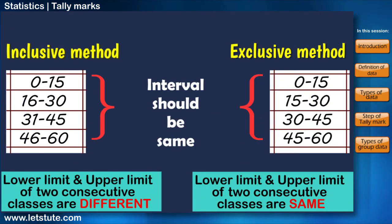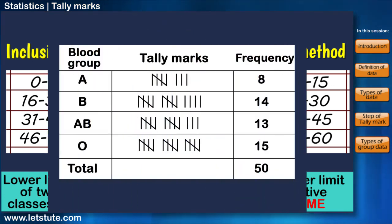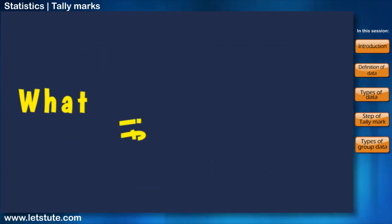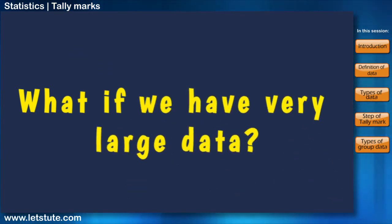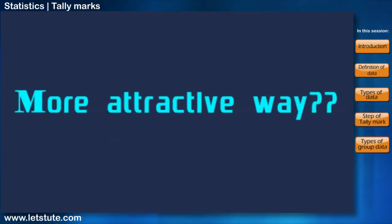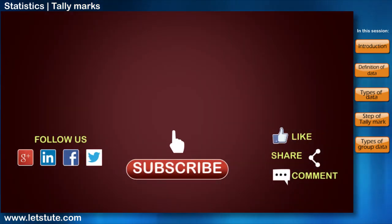I hope the procedure for making groups or classes is clear now. Friends, tally marks are used to arrange smaller data in only one pattern. But the main question is, what if we have very large data? Can there be any provision to arrange it in a more attractive way? To know all about it, do watch our upcoming sessions. Thank you, keep watching, keep learning.